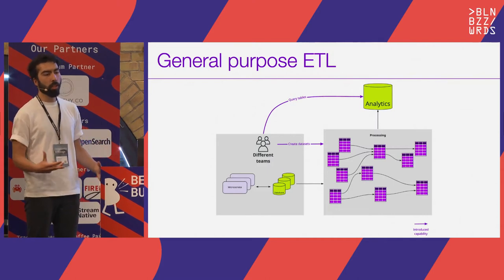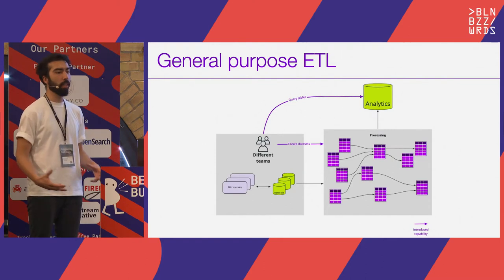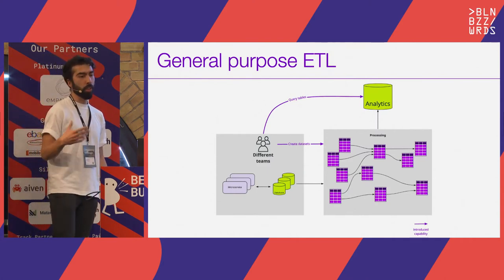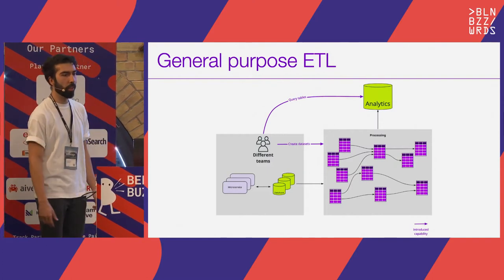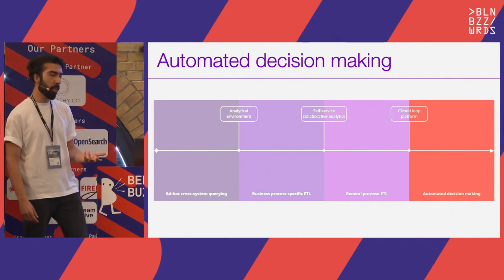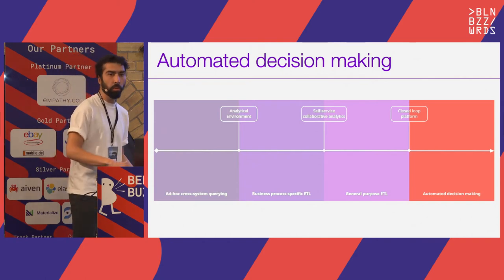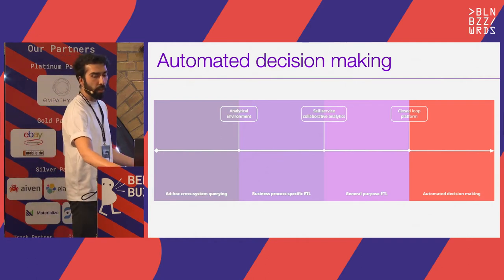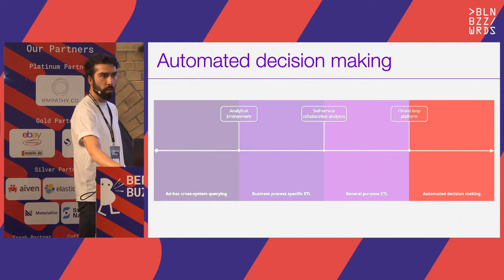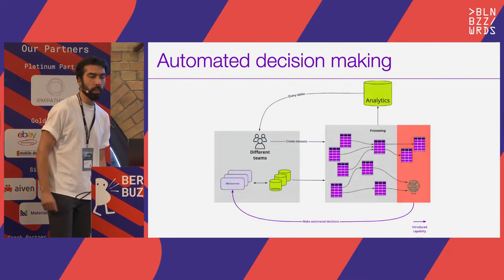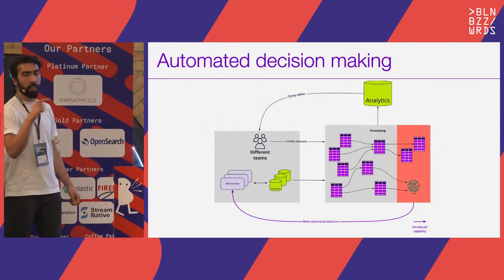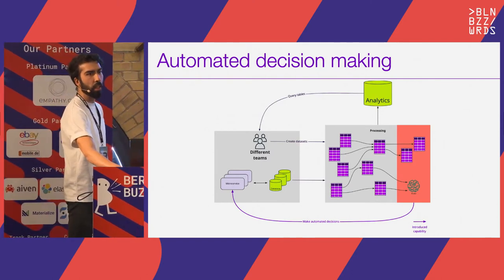We generalized that analytical environment, created solutions to ingest things in a consistent way across the company, and made it so that different teams were able to create datasets. Finally, the last stage is actually making automated decisions based on that data — represented as a single arrow on the graph but involving a lot, specifically bringing analytical data back to transactional systems and making automated decisions based on those.